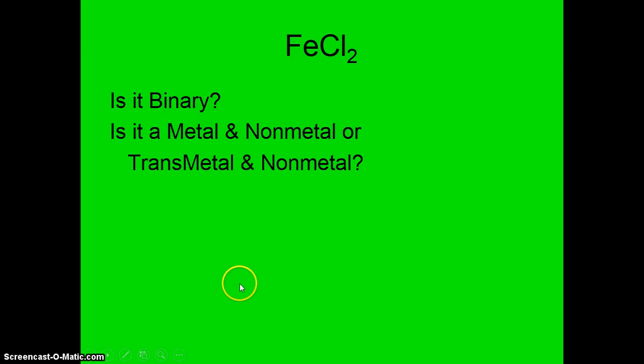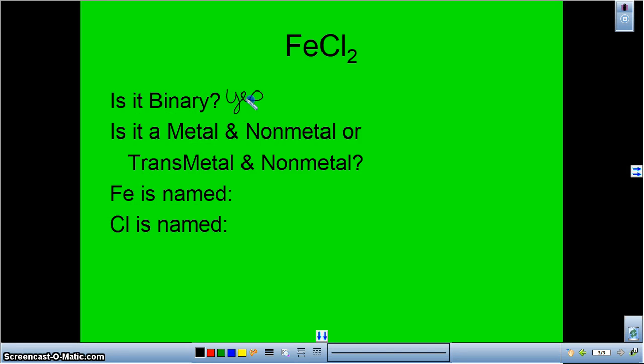So FeCl2 is a binary, and the answer to that is yes. Is it a binary, and that's yes. Is it a metal and a non-metal, or a transition metal and a non-metal? And you'll find Fe in the trough, so it's a transition metal and a non-metal. So we're going to name Fe, which is iron. We're going to name Cl, which is chlorine. But we're going to change the name on chlorine to chloride. And that's all fine and dandy. The only problem that I have is that I don't know which ion I'm talking about, because it can form more than one. So what I'm going to do is rely on the charge of the non-metal.